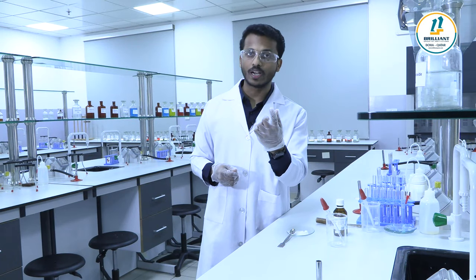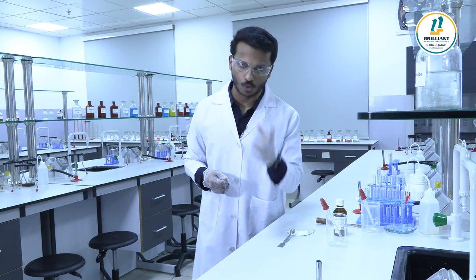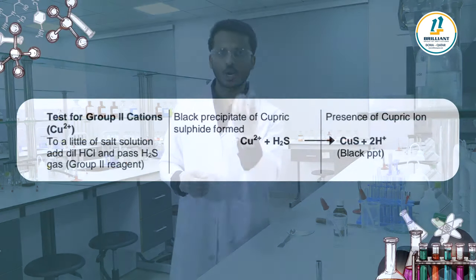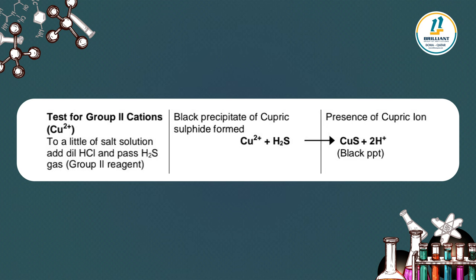Group two contains Cu2+. To a little of salt solution, add dilute HCl and pass H2S gas — these are the group two reagents. If you get a black precipitate of cupric sulfide, it indicates Cu2+ is present. However, copper salts are normally colored, so they usually won't provide a copper salt for examination.